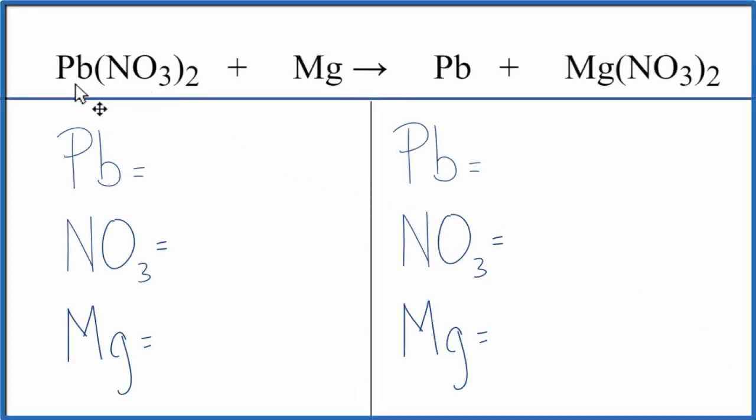In this video, we'll balance the equation Pb(NO3)2 plus Mg. That's lead 2 nitrate plus magnesium.